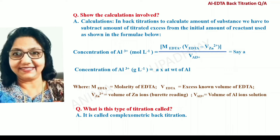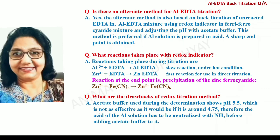What is this type of titration called? It is called complexometric back titration. Is there an alternate method for Aluminium-EDTA titration? Yes, the alternate method is also based on back titration of unreacted EDTA in the Aluminium-EDTA mixture using a Redox indicator in a ferrocyanide mixture and adjusting the pH with acetate buffer. This method is preferred if the Aluminium solution is prepared in acid.